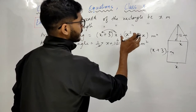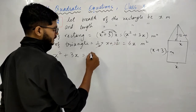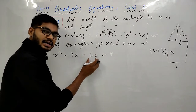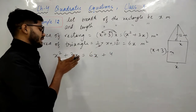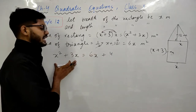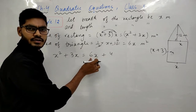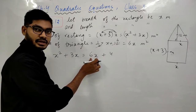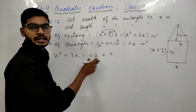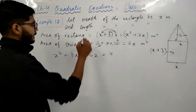Question में कहा है — rectangle का area, triangle के area से 4 ज़्यादा है। यानी अगर triangle के area में 4 add करें तो rectangle का area मिलेगा। So: area of rectangle = area of triangle + 4, यानी x² + 3x = 6x + 4।